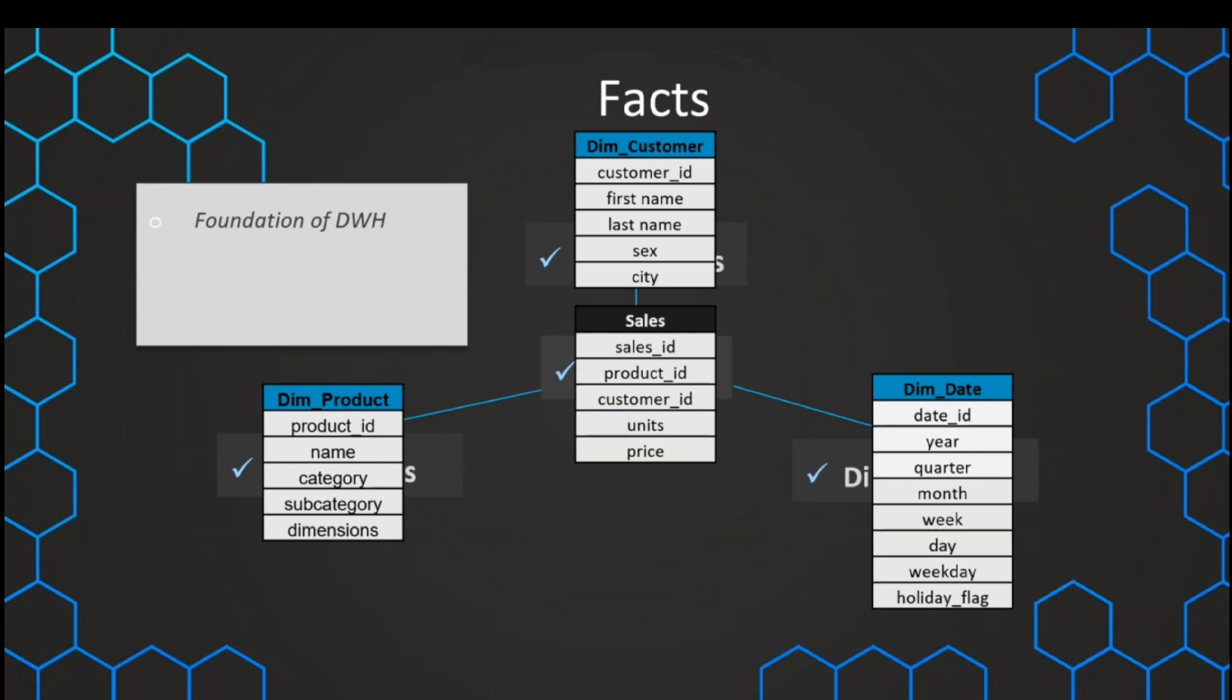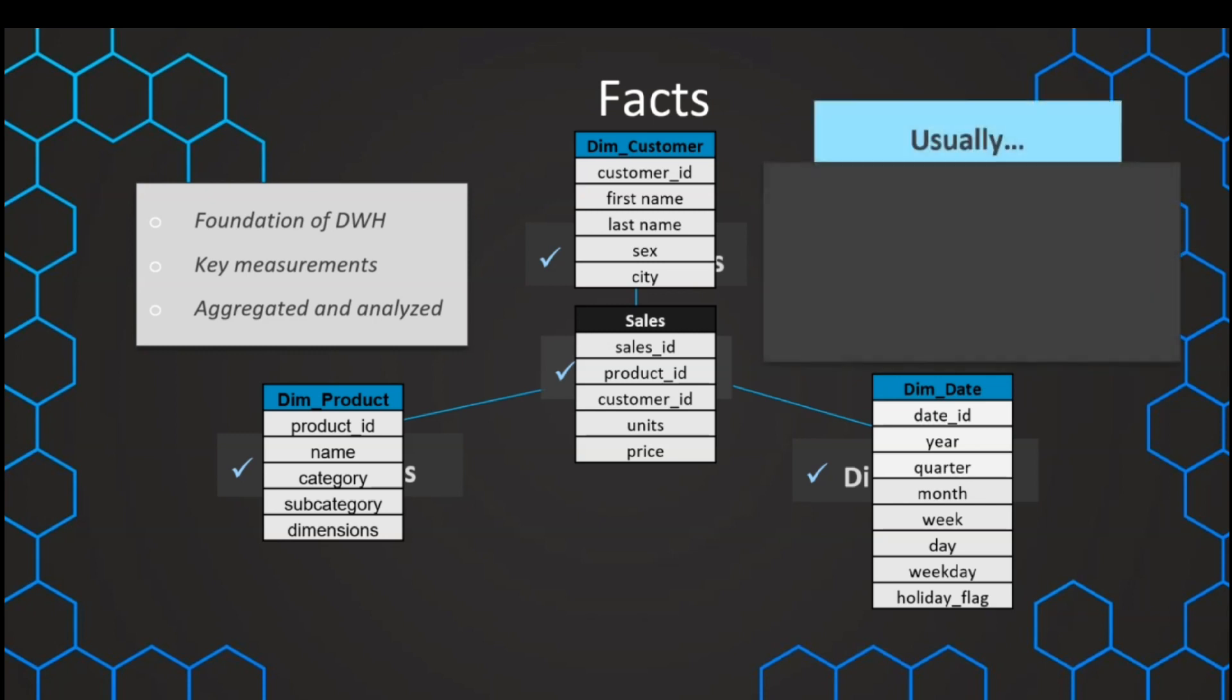This fact table is the foundation of our data warehouse, because it contains the key measurements in our company, for example, sales, profit, units sold, and so on. And these facts are then what we want to aggregate usually and analyze by the dimensions. And since the distinction between facts and dimensions is sometimes not so clear, there are some things that help us to recognize a fact.